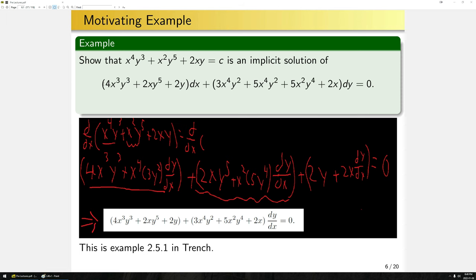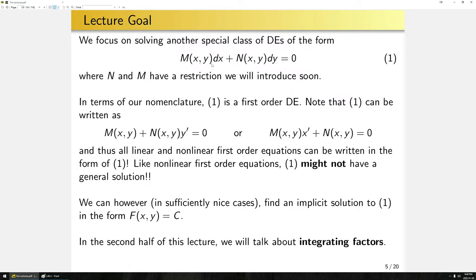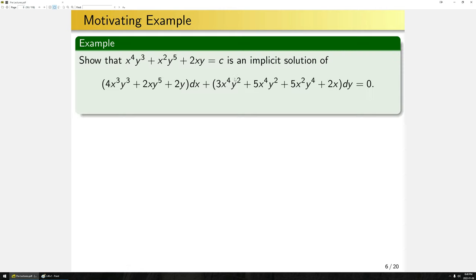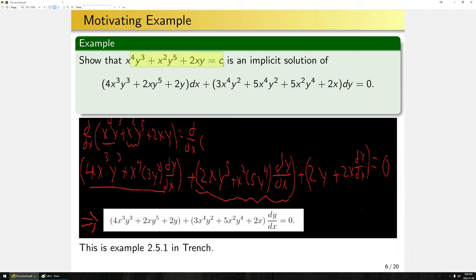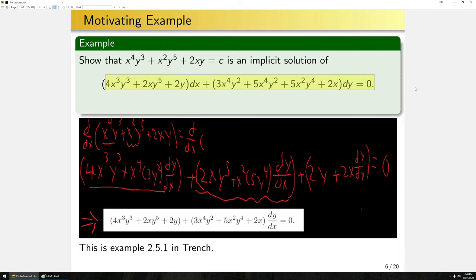Notice in this example the differential equation was of the form m of x,y dx equals n of x,y dy, and we could verify that the implicit function was a solution. The natural question is: in which cases can we go from that form to an implicit function? In general, it's quite difficult to explicitly quantify when we can solve these equations, but it is decently easy to find certain classes of equations that we can readily solve.